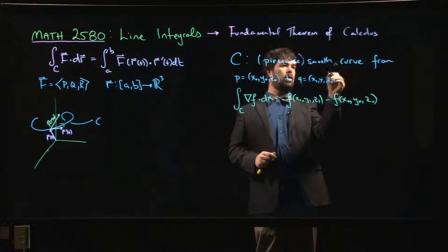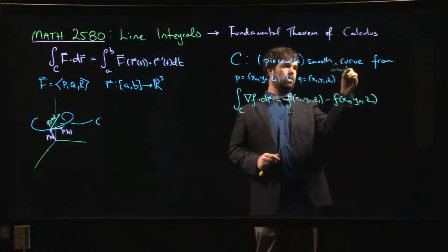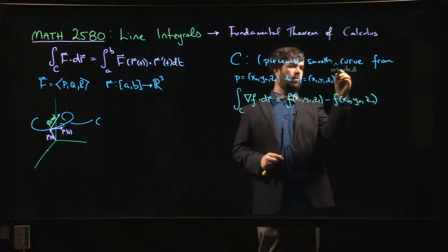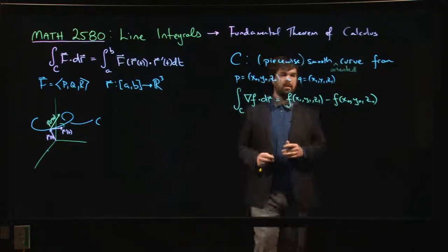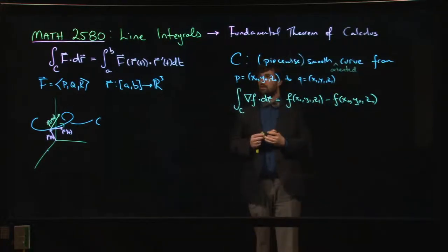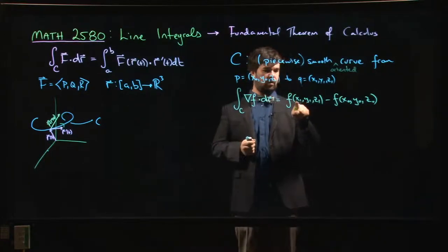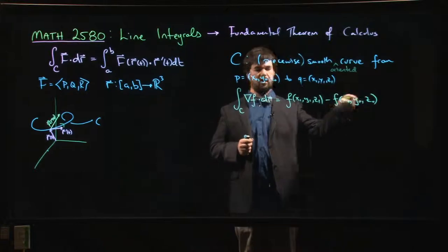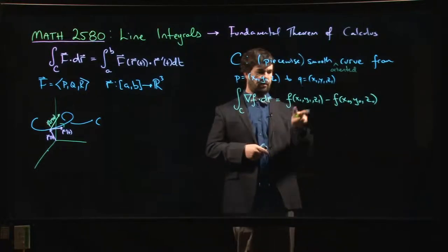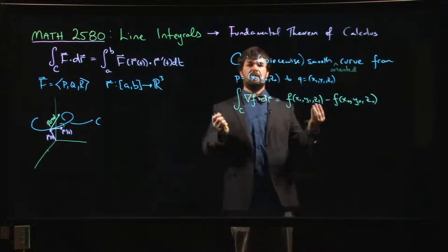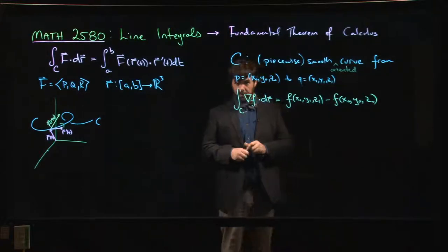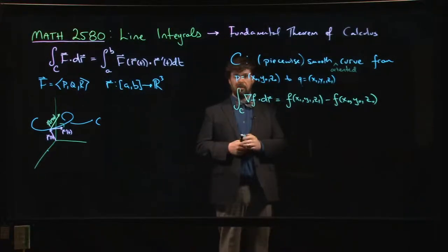But also it has to be oriented. You have to have some notion of the beginning and the ending of your curve, because we do f at the endpoint minus f at the initial point. That's what you're seeing here - final minus initial, just like the fundamental theorem of calculus in one variable that you see in calc 1.